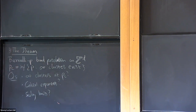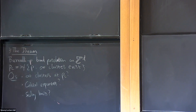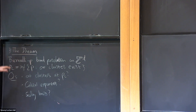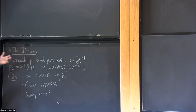I'm going to be considering Bernoulli bond percolation on Z^D. We start with the hypercubic lattice, flip a coin for each edge — P heads, one minus P tails — keep the heads, delete the tails. That's just the definition of Bernoulli bond percolation. In dimension two and higher, this undergoes a phase transition. We define P_c to be the infimal value of P where infinite clusters exist, which is strictly between zero and one in dimension two and higher.